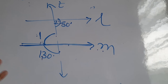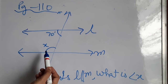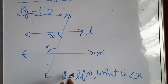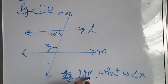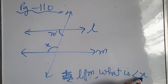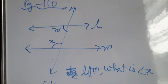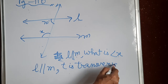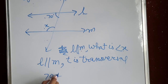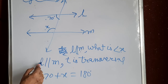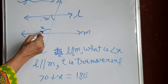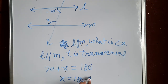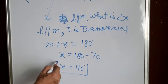Now try the third part. A figure is given and the question is: L is already given parallel to M and T is the transversal. You have to find the value of X. Since lines are parallel, the sum of co-interior angles is always 180 degrees. So X plus 70 equals 180, which gives X equals 180 minus 70 equals 110 degrees.